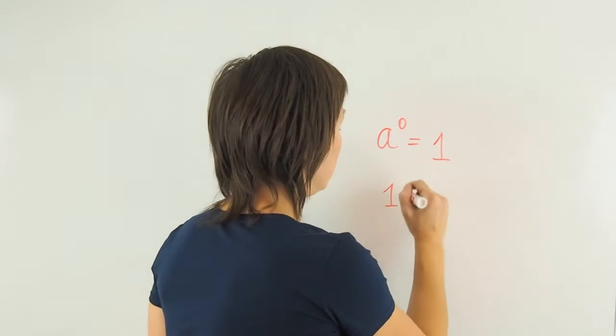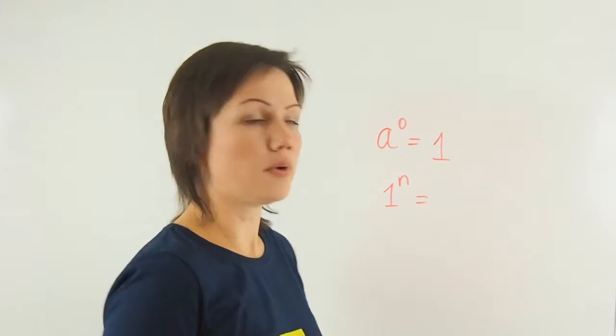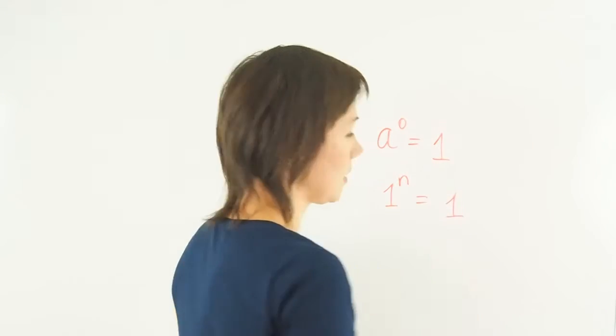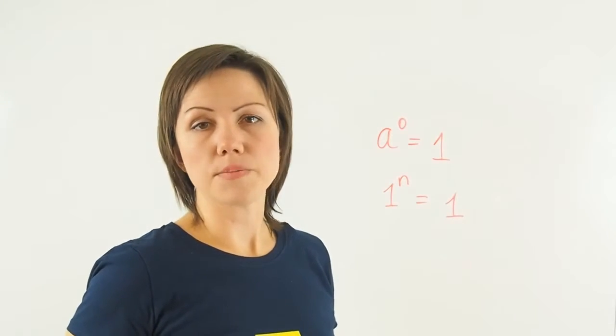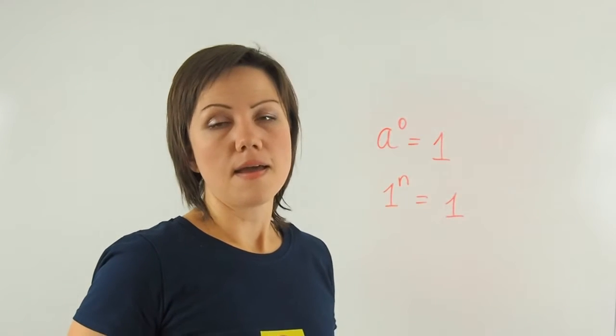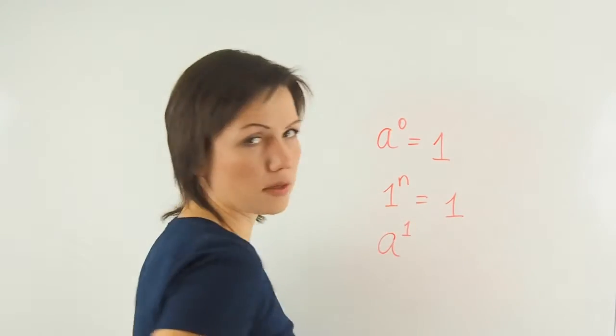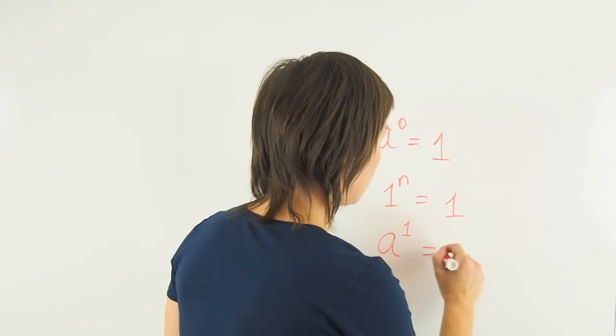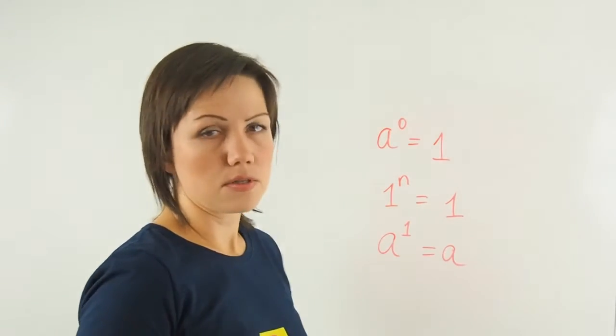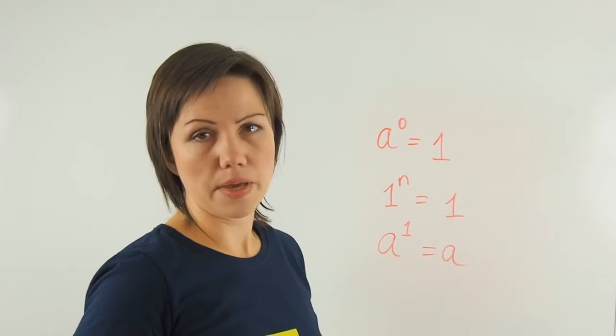Next, 1 to any power is always equal to 1, because no matter how many times you multiply 1 by itself, it's still going to be 1. And another one is when you raise a number to the exponent of 1, it's just going to be that number. So the base to the power of 1 is equal to the base itself.